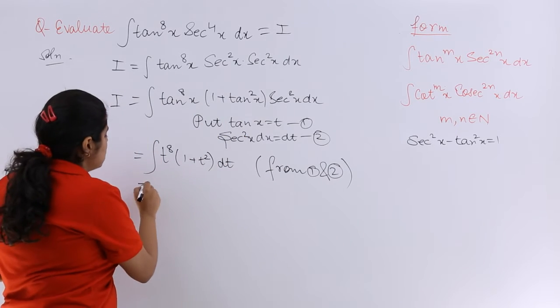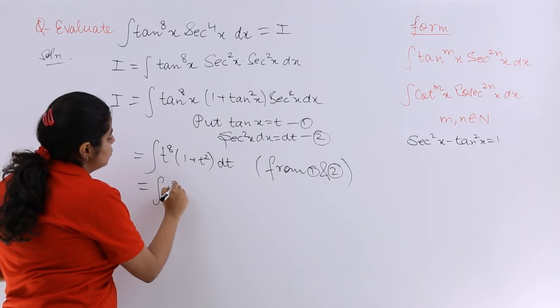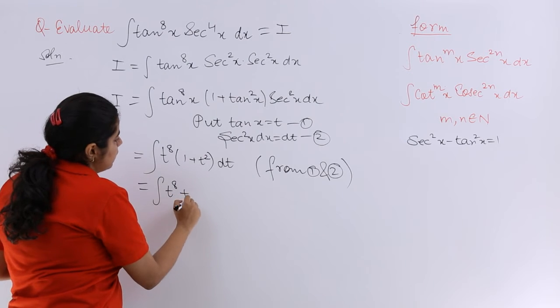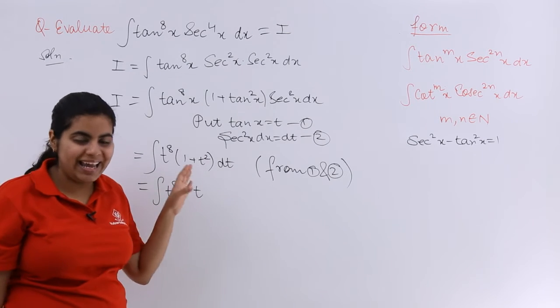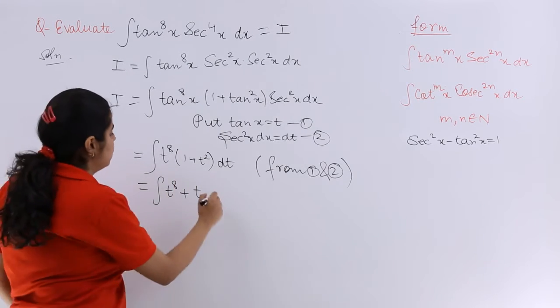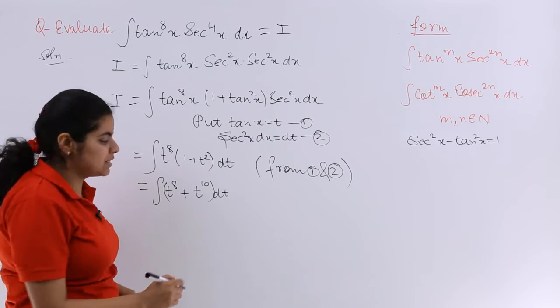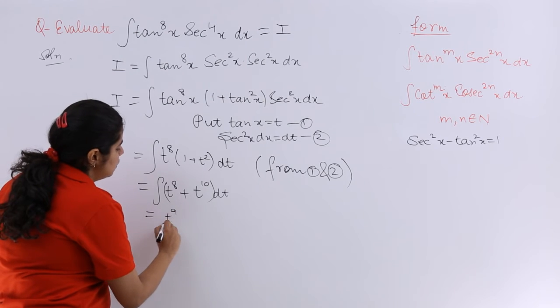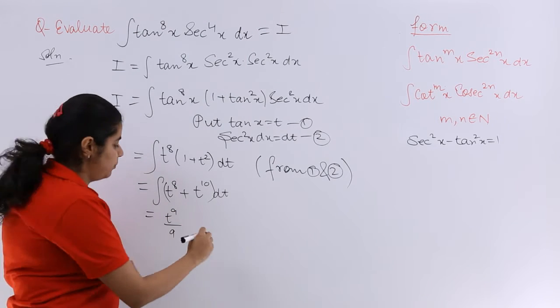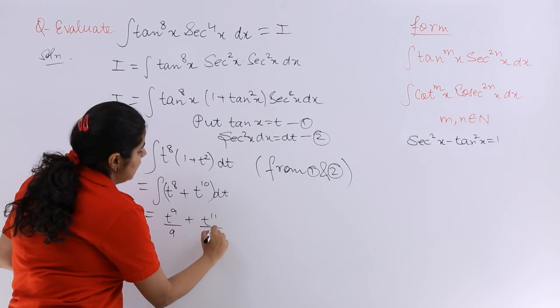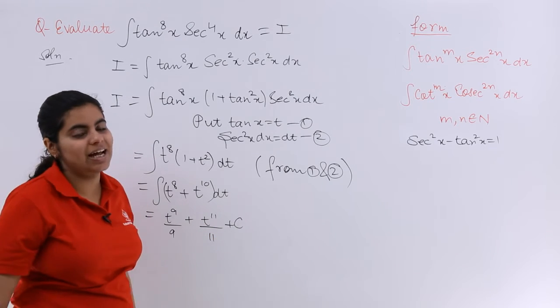The question is not at all difficult. So we will be opening the bracket. So t raised to the power 8 plus t raised to the power 8 multiply by t raised to the power 2, which is t raised to the power 10 dt. Integration very simple now. It is nothing but t raised to the power 9 upon 9 plus t raised to the power 11 upon 11 plus the constant of integration.